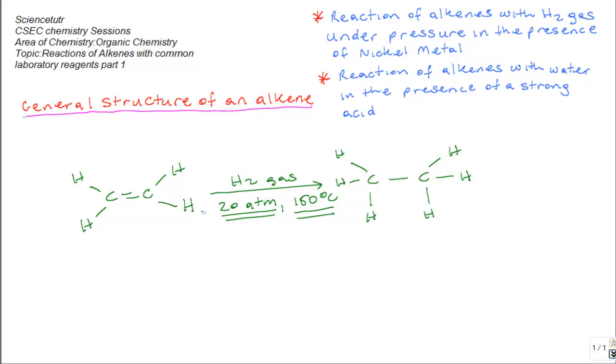Note that originally, ethane had four hydrogens in it. Now, ethane, the product, has six hydrogen atoms attached to the carbon atoms. Therefore, this reaction is an addition reaction.